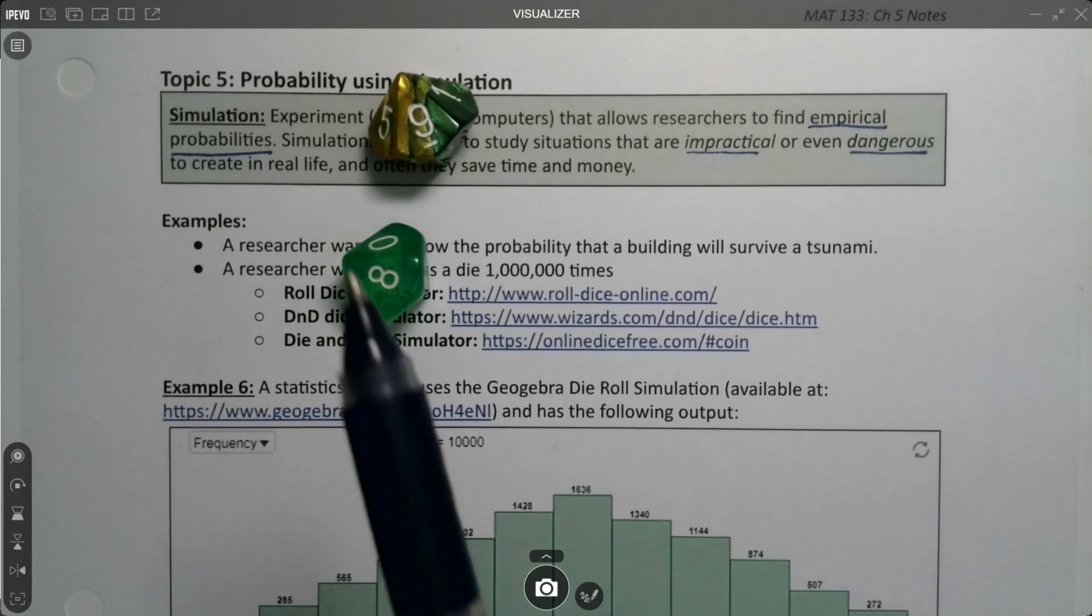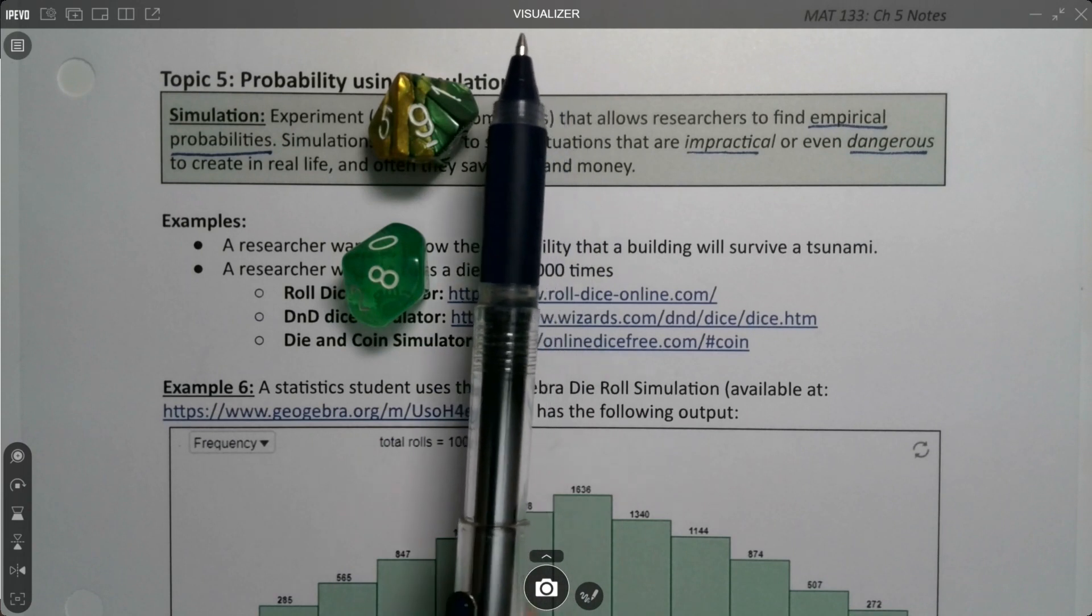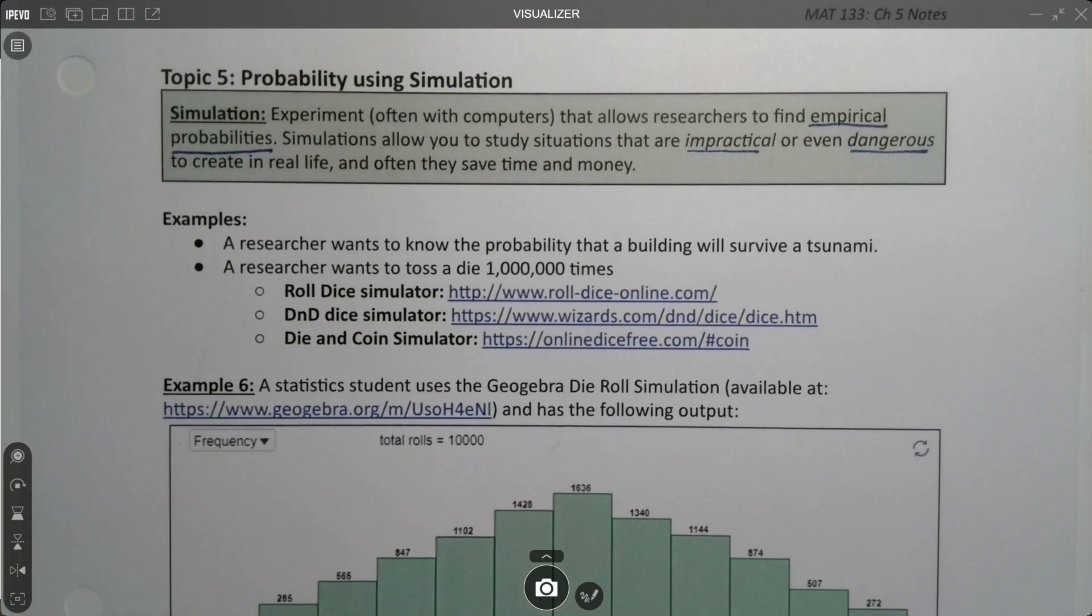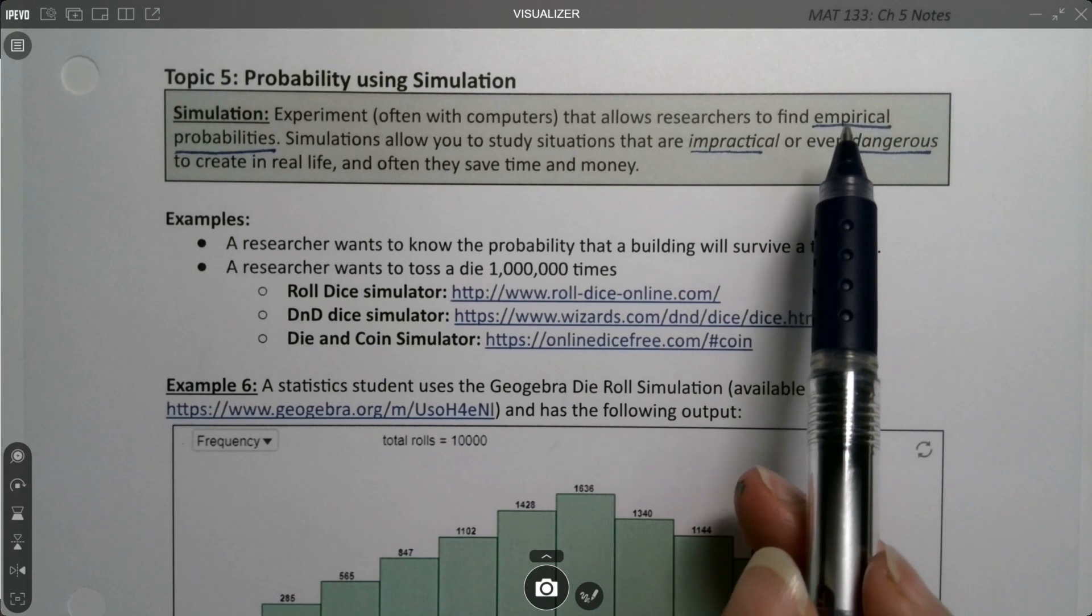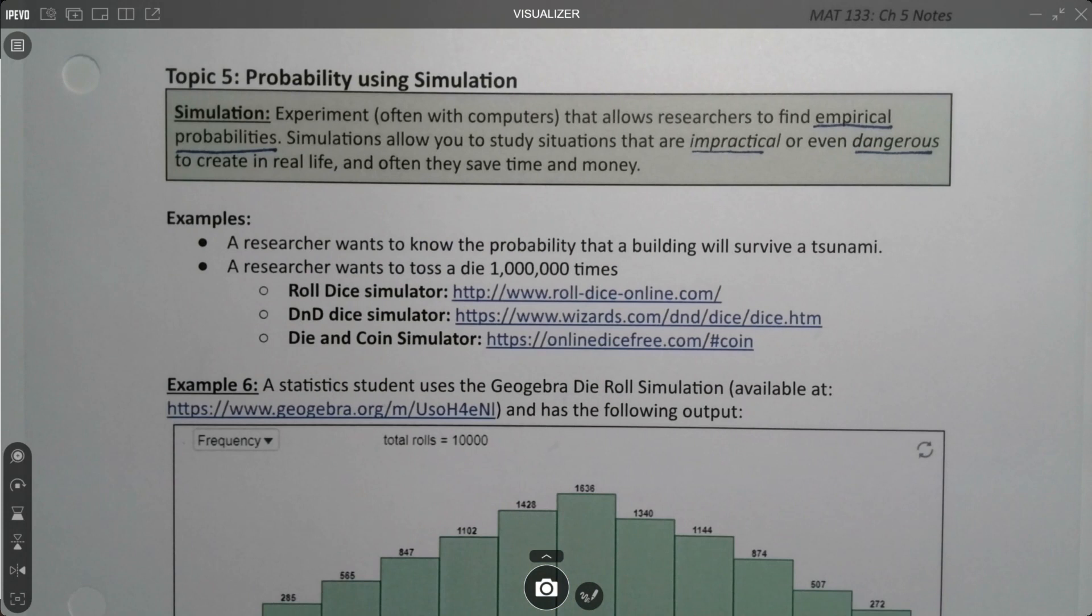So far we've seen probability with things like dice and cards and roulette wheels because they're really easy to figure out. That's classical probability. Then we also saw empirical probability from real-life data that was tracked. But that leaves out a lot of things because there are a lot of things in this world that we can't track easily because they're too impractical or dangerous in real life and we want to save time and money. And so we're going to find empirical probabilities but from simulations because we have the computers that are so advanced nowadays that we can use them to figure out probabilities for us.